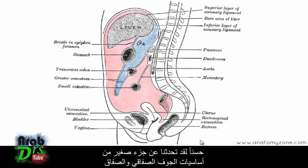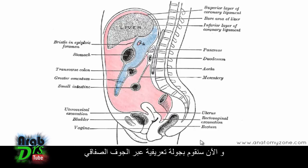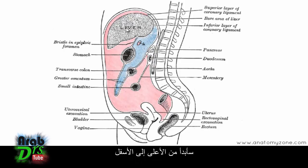We've talked about the basics of the peritoneal cavity and the peritoneum — what the visceral and parietal peritoneum are and the divisions of the cavity, the greater and lesser sacs. Now we'll have a guided tour through the peritoneal cavity. We'll start at the liver and look at some of the peritoneal attachments in more detail, starting at the top and working our way down.